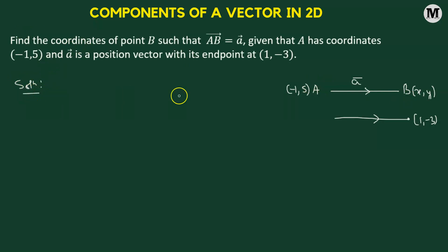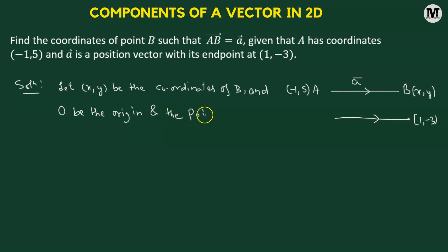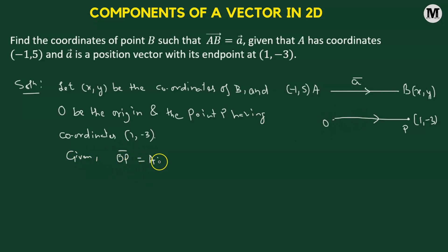We'll first assume that the coordinates of point B are x comma y. We're also going to consider O to be the origin with coordinates 0 comma 0, and a point P having coordinates 1 comma negative 3. It's given in the problem that OP vector is going to be equal to AB vector.